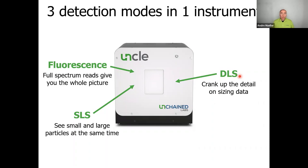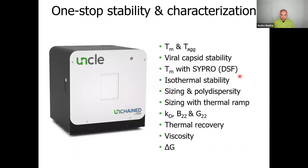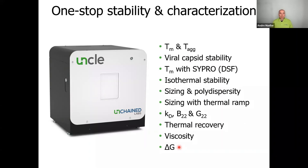These three detection modes combine to a dozen different applications. Today we will focus on the Tm/Tagg applications — melting temperature and aggregation temperature of proteins — and the viral capsid stability application, as well as some sizing and polydispersity information. Other applications include colloidal stability parameters like kD, B22, and G22, or isothermal chemical denaturation experiments and delta G.